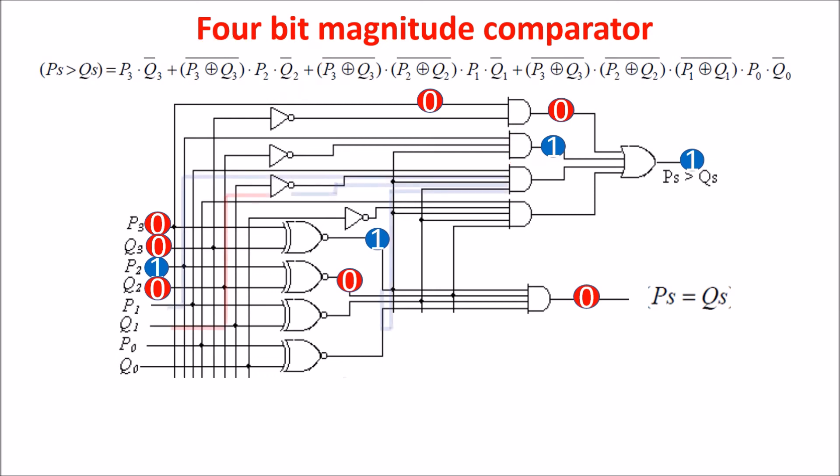So it has all the 3 inputs at 1. It is easy to see that this circuit implements all the 4 conditions to have P greater than Q.